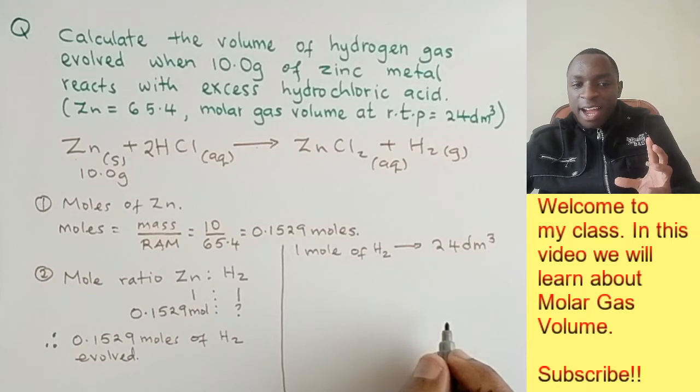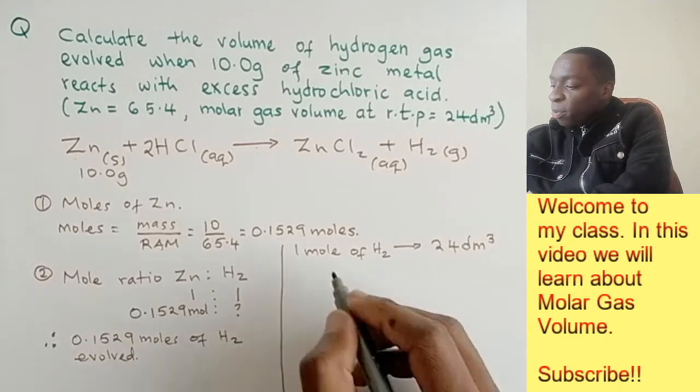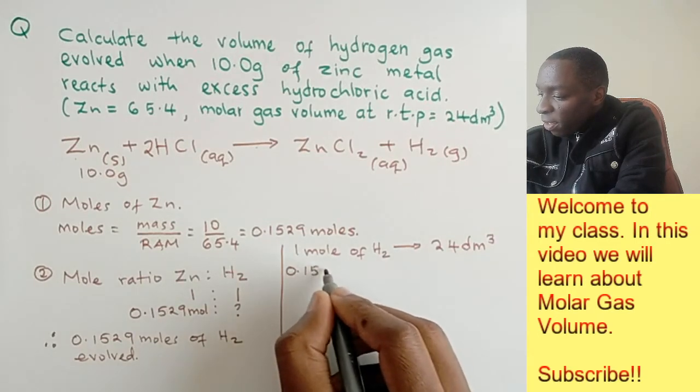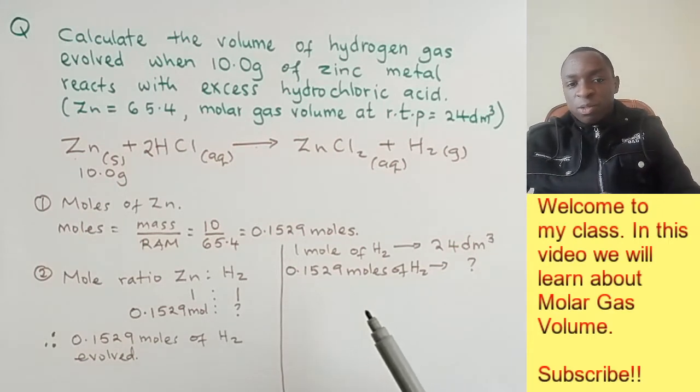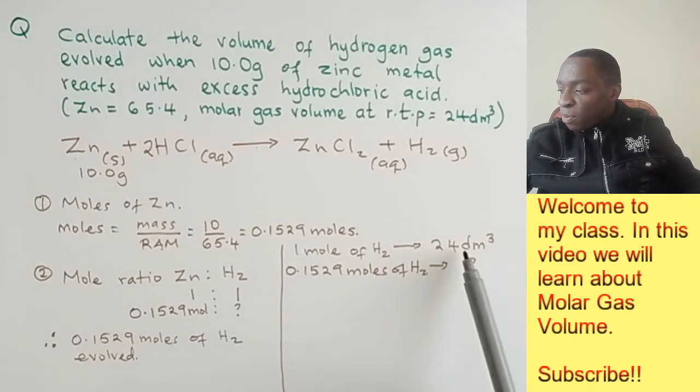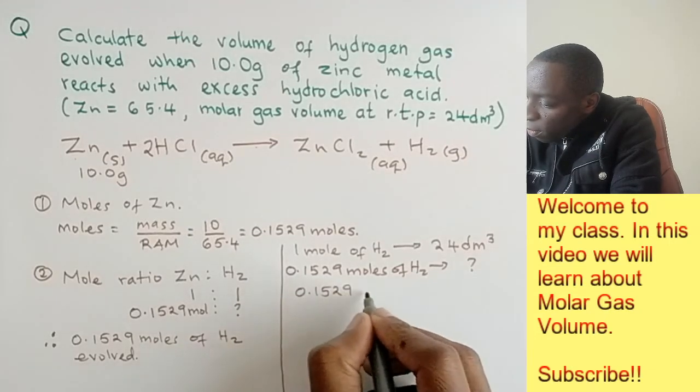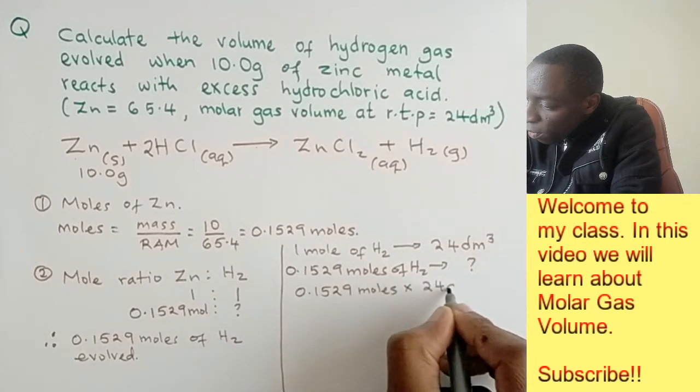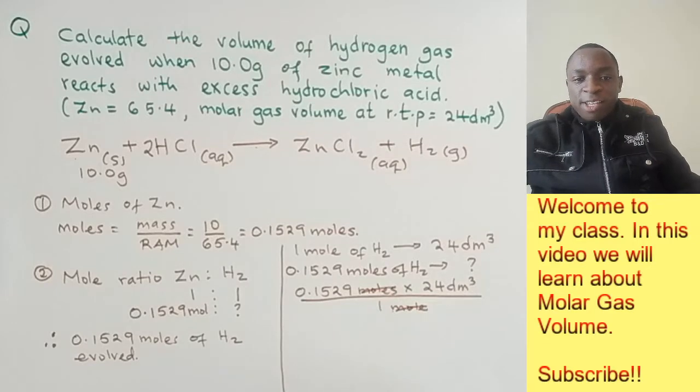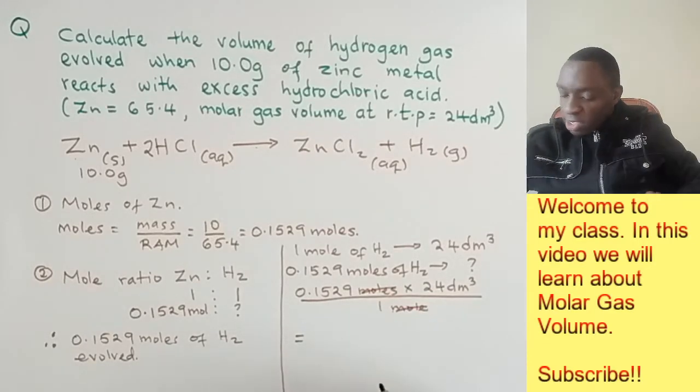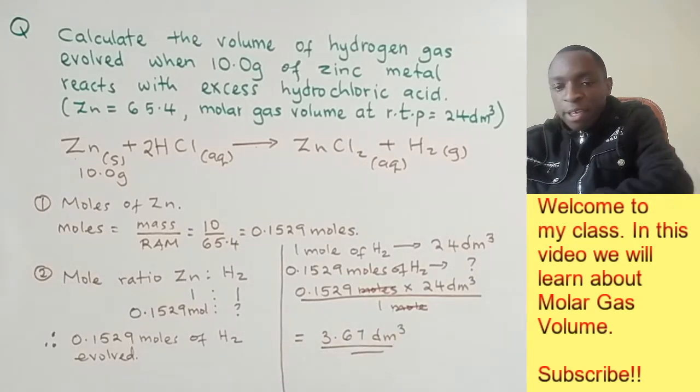The question is: what volume would 0.1529 moles of hydrogen occupy? So we put down 0.1529. This again is a case of cross multiplication. We take 0.1529 multiplied by 24 dm³, divide by 1. The moles cross out and the remaining values you calculate. You get 3.67 dm³.